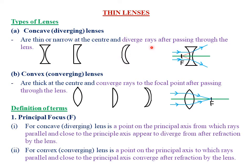A concave lens is also called a diverging lens because it diverges rays of light after passing through it. The rays of light which are close and parallel to the principal axis, upon reaching this particular concave lens, they actually diverge from a certain point which we call F, or simply the principal focus. The incident rays are parallel to each other and parallel to the principal axis, but upon reaching our concave lens, they actually diverge. To diverge is simply to move from a common point towards different directions.